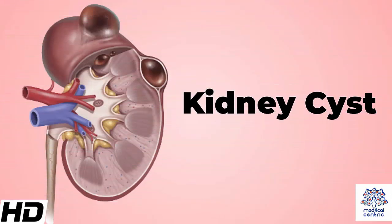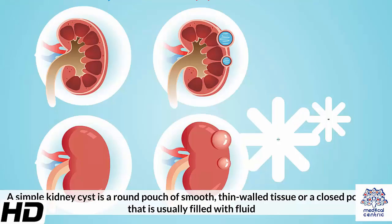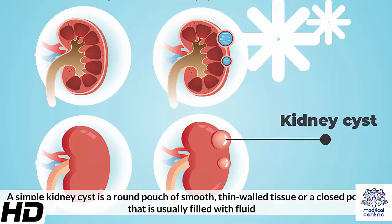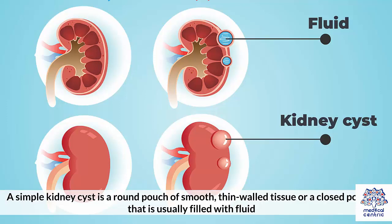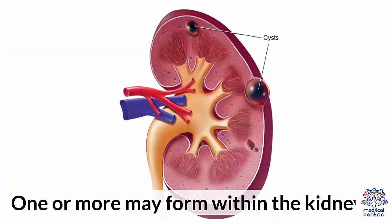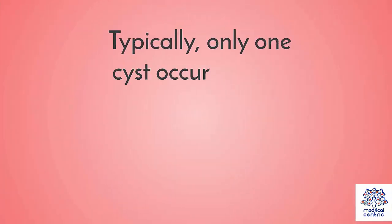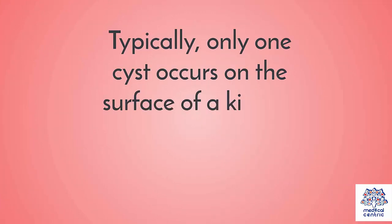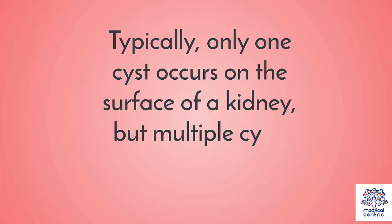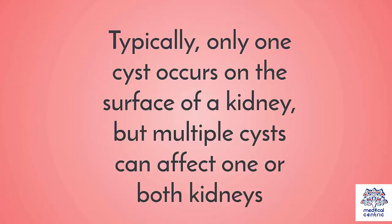Today's topic is kidney cyst. A simple kidney cyst is a round pouch of smooth, thin-walled tissue or a closed pocket that is usually filled with fluid. One or more may form within the kidneys. Typically, only one cyst occurs on the surface of a kidney, but multiple cysts can affect one or both kidneys.